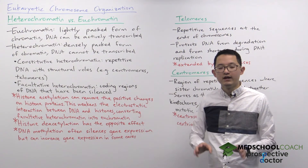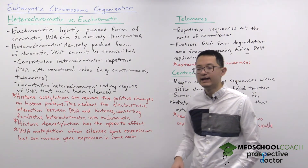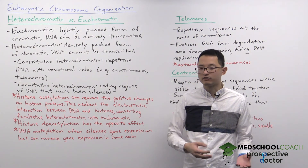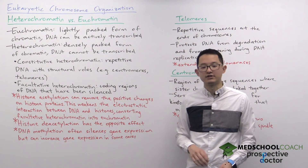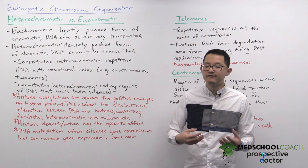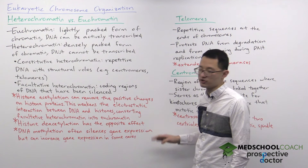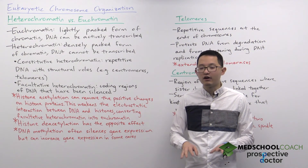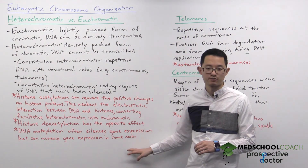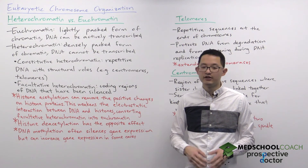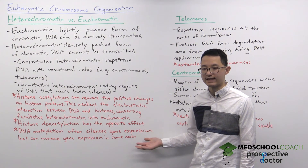While on the topic of altering gene expression, it's also important to discuss DNA methylation. Generally, the addition of methyl groups to DNA molecules results in silencing gene expression. A very famous example is the inactivation of one of the two X chromosomes in females, which is caused by DNA methylation. Note that there are instances where DNA methylation can increase gene expression, but for the purposes of the MCAT, generally DNA methylation results in gene expression silencing.